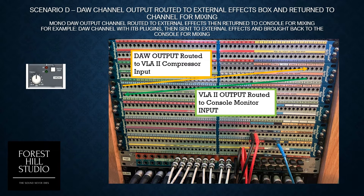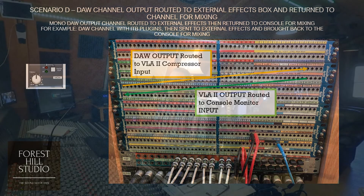To do that, we would use the monitor section of the channel strip: we take the DAW output, route that over to our BLA compressor input, take the output of the compressor and route that back to the monitor input. That brings the affected signal back onto the channel strip for use during tracking, recording, printing, or whatever you might want to do there.